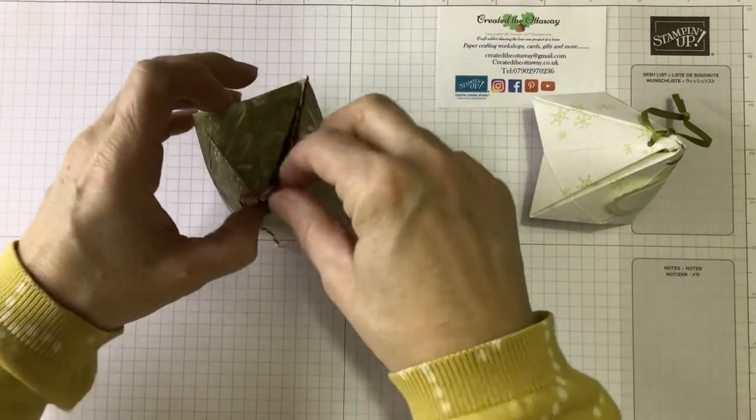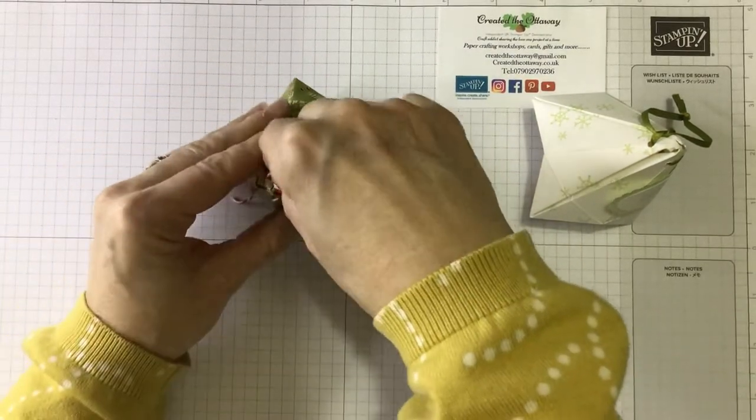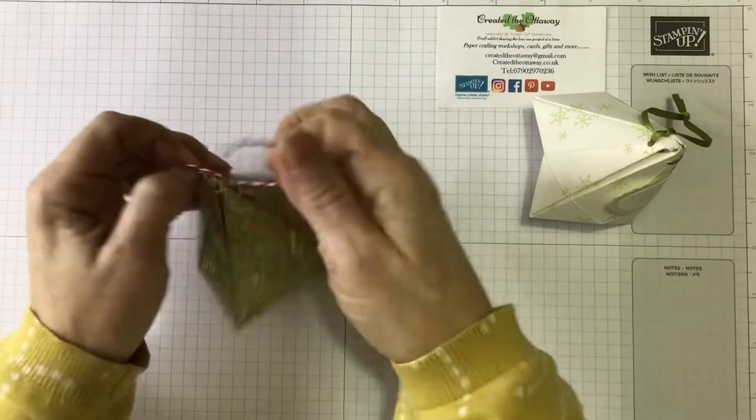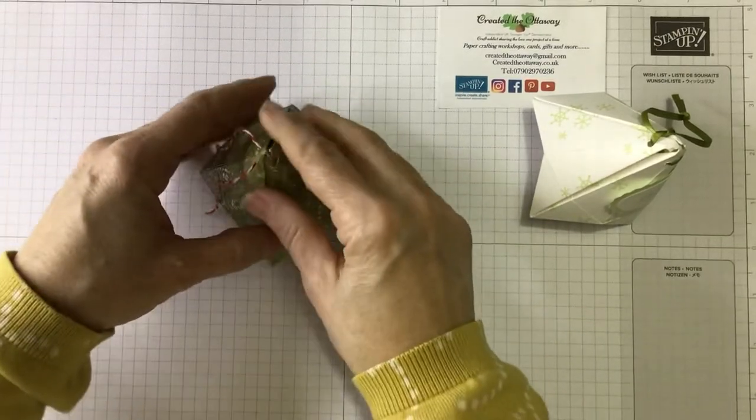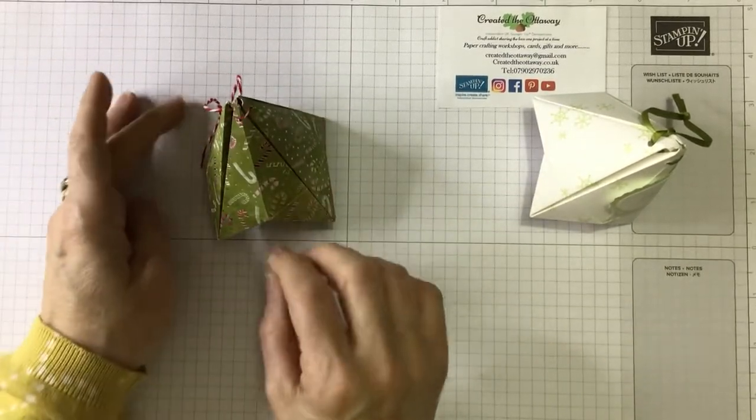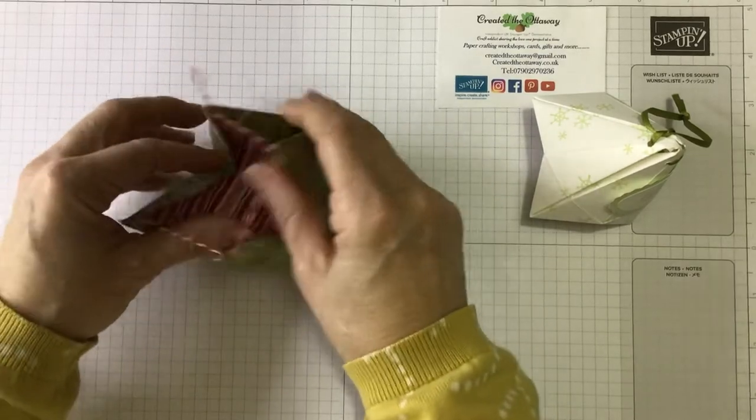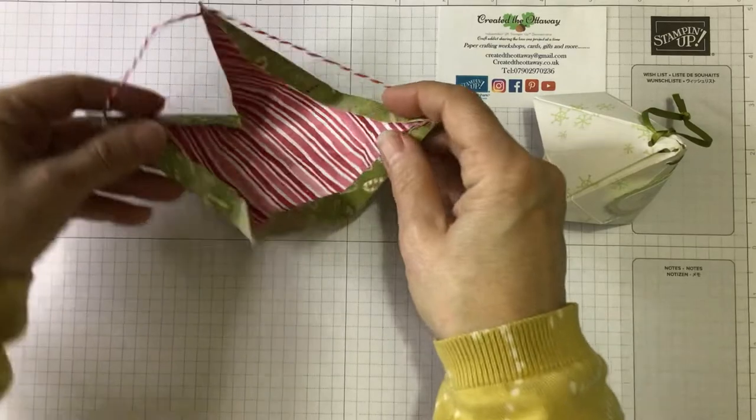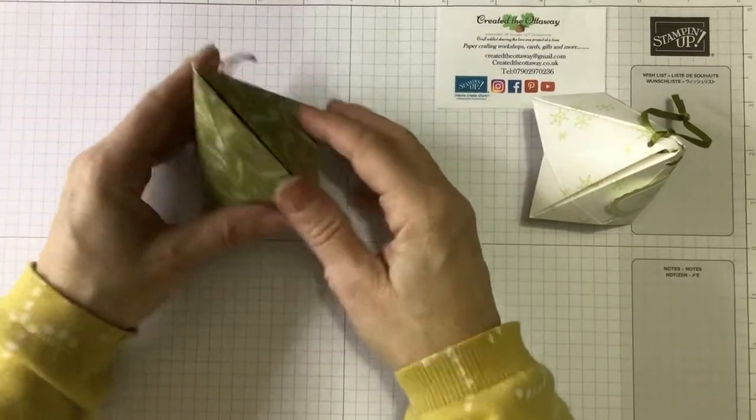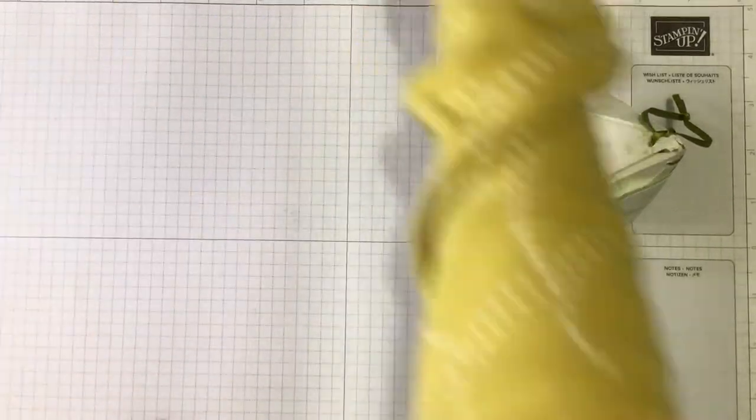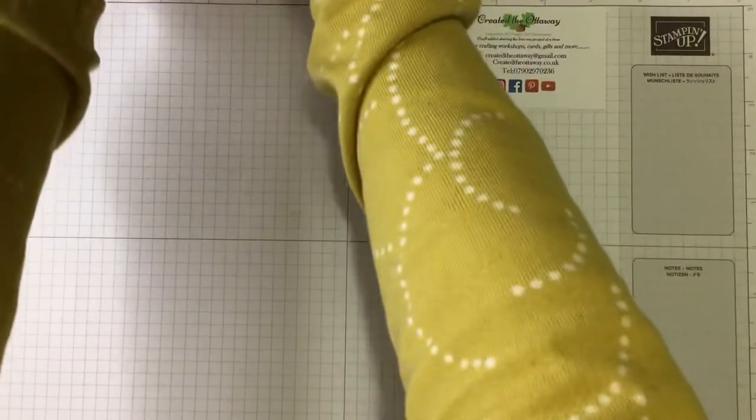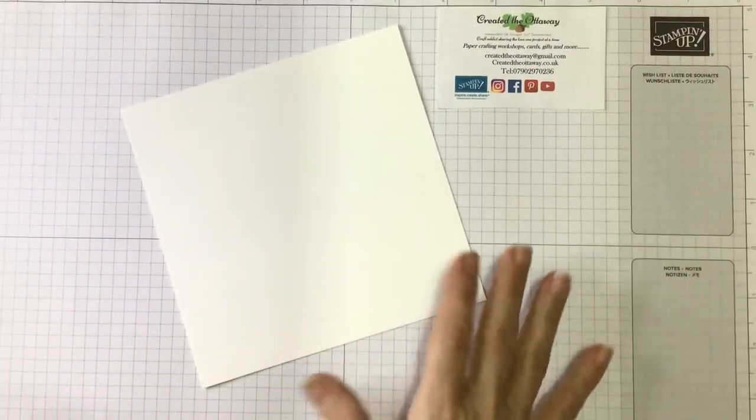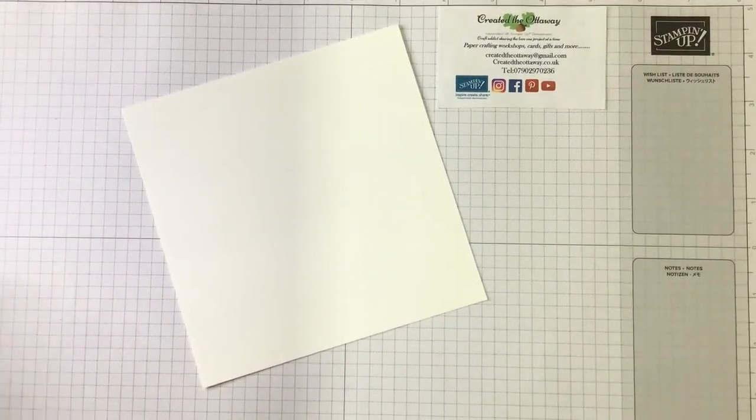And what happens when you open it, let's see if I open this one. You could use it as a table decoration as well because it does sort of sit quite nicely. But you just open it up and you can see how much room there is inside. You can see how lovely that paper is. Okay, so we're going to make one, just a white one, and I'm going to stamp all over it just to show you how I've done that.